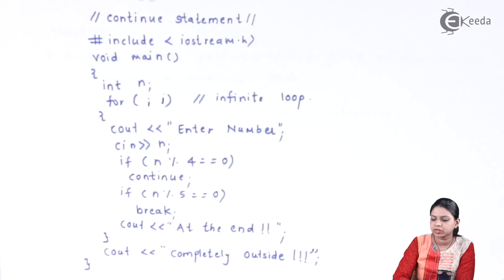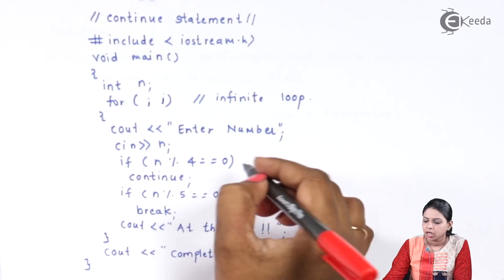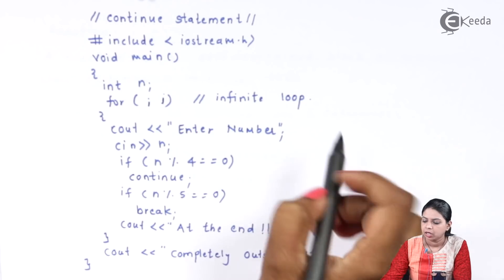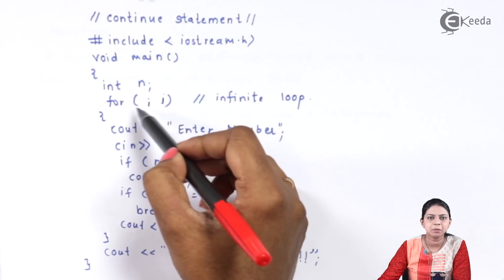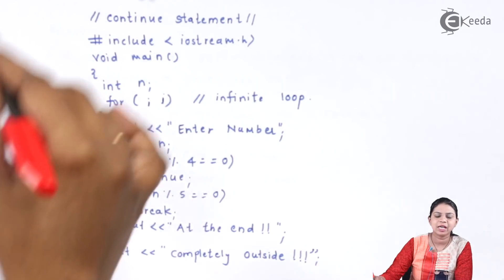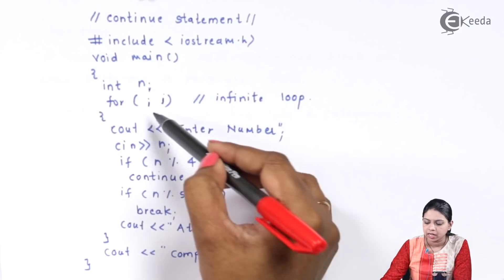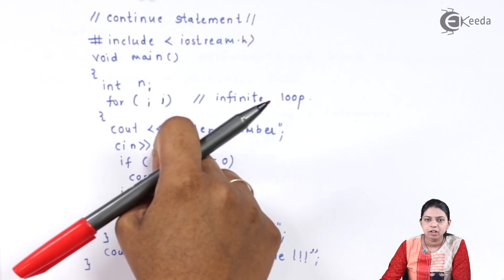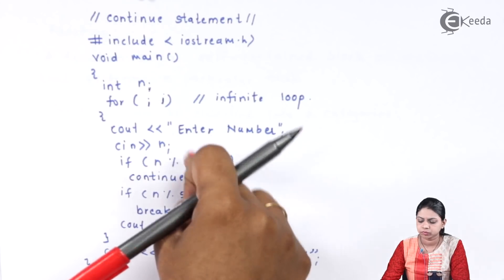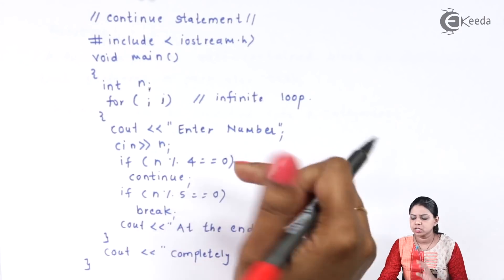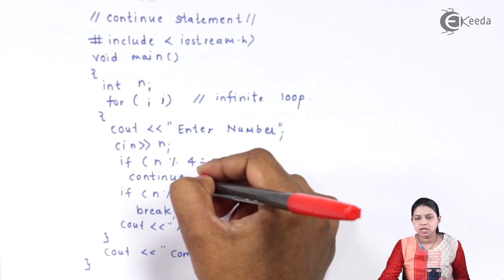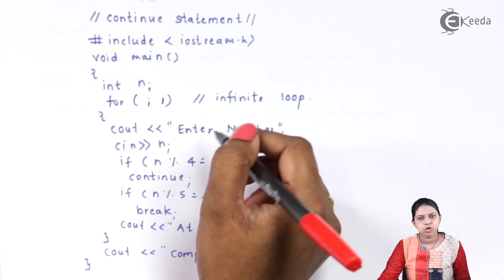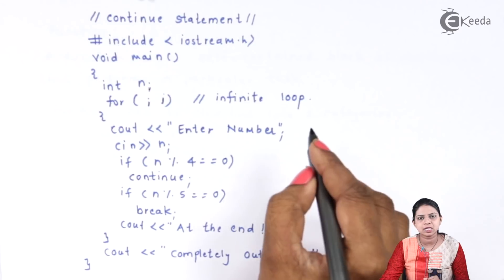The next statement is the continue statement. Whatever you have written after the continue statement won't get executed, and control gets transferred back to the beginning of the loop. This is an infinite loop — no condition is mentioned, so it goes inside the loop for an indefinite time. I have taken one variable n. If the user enters 8, then 8 is divisible by 4, giving remainder 0, so continue executes and control goes back to the beginning, allowing the user to enter another number.